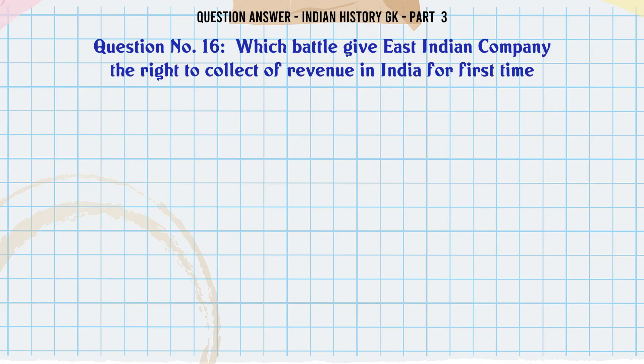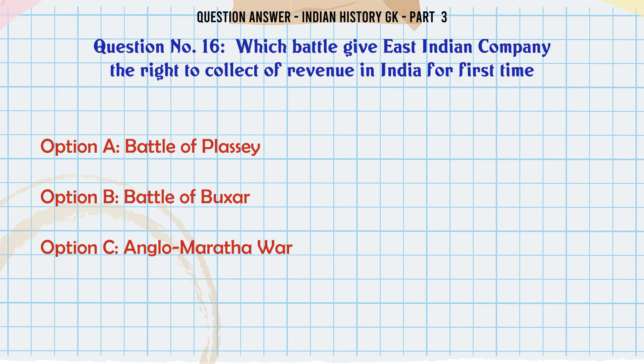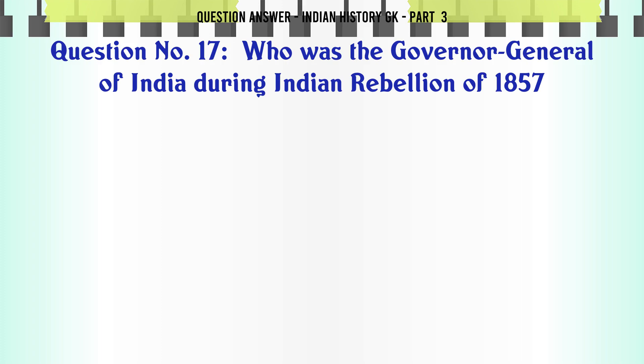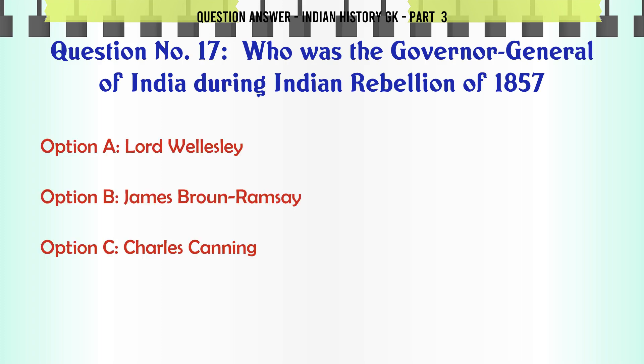Which battle gave the East India Company the right to collect revenue in India for the first time? A. Battle of Plassey, B. Battle of Buxar, C. Anglo-Maratha War, D. Anglo-Marsal War. The correct answer is Battle of Buxar.